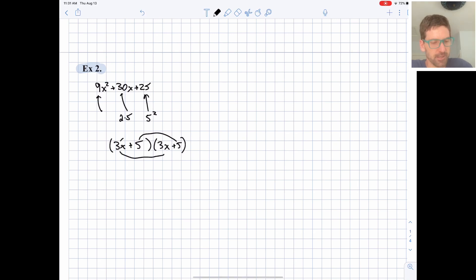3x times 3x gives us the 9x², and 5 times 5 gives us the 25. Let's do outers and inners: 3x times 5 is 15x, and 5 times 3x is 15x also. Those add together to give us the 30, so that does check out. So we have (3x + 5)² as the final answer.